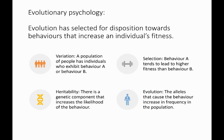First of all, variation: a population of people has individuals who exhibit behavior A or behavior B. Selection: behavior A tends to lead to higher fitness. Remember that is survival, reproduction, and the ability to produce offspring that themselves can reproduce. So it leads to higher fitness than behavior B.